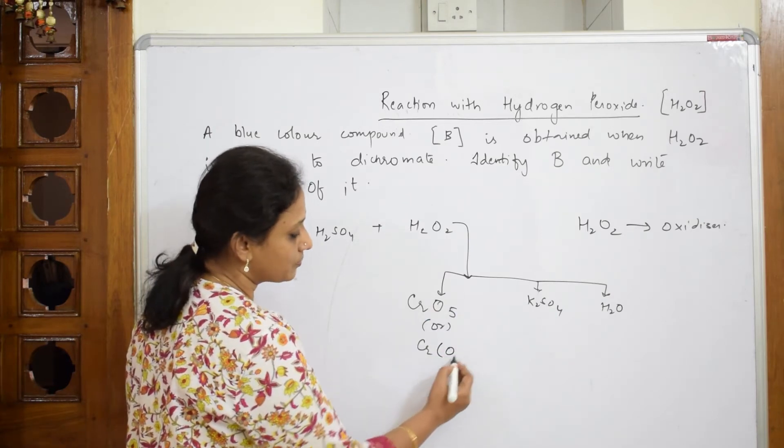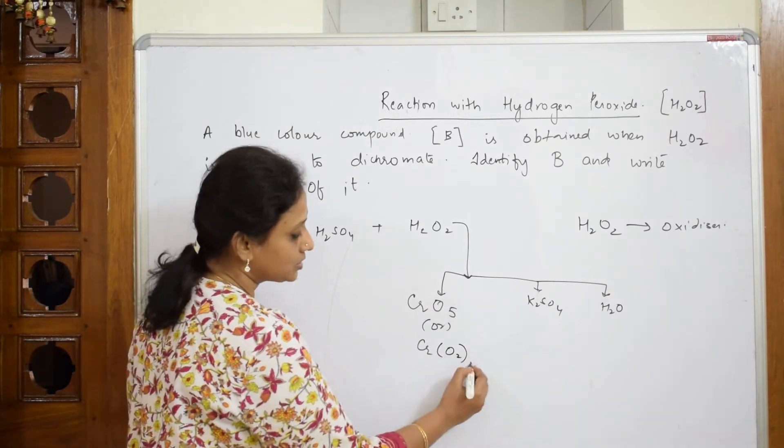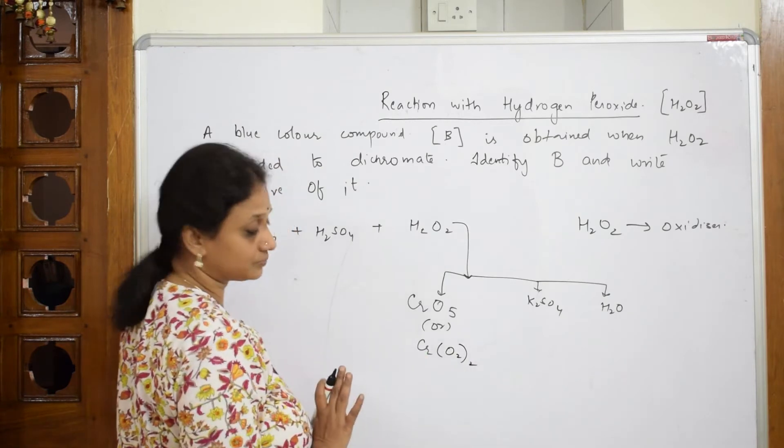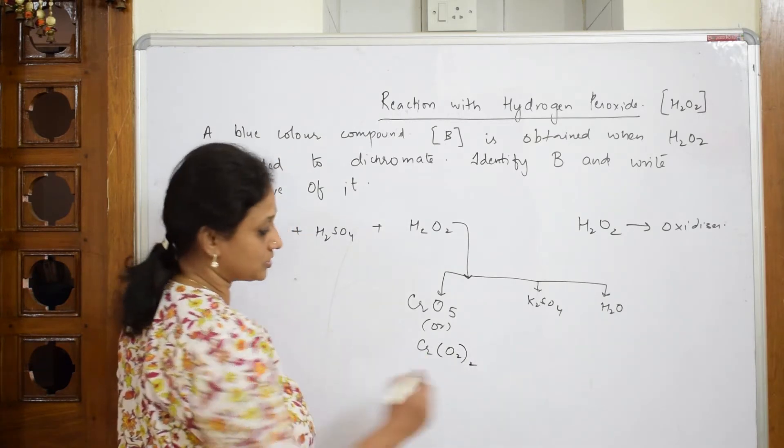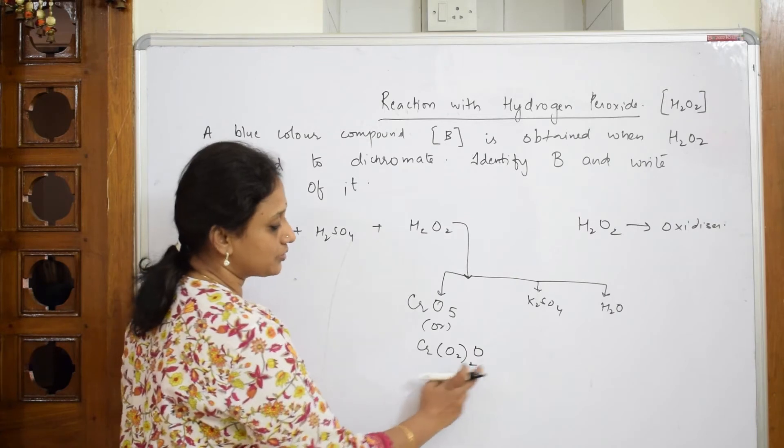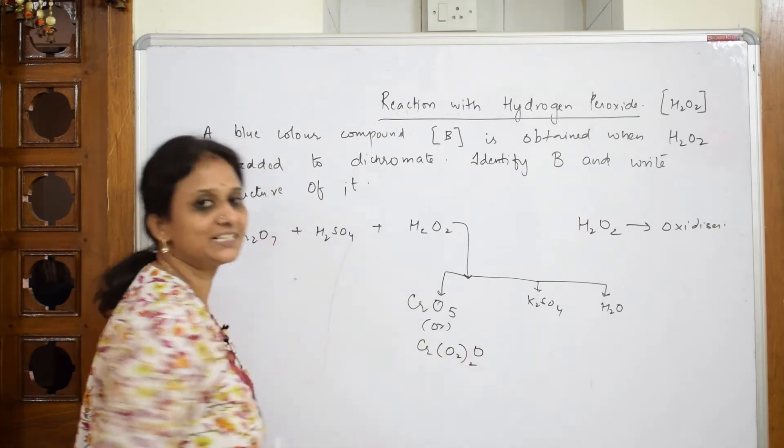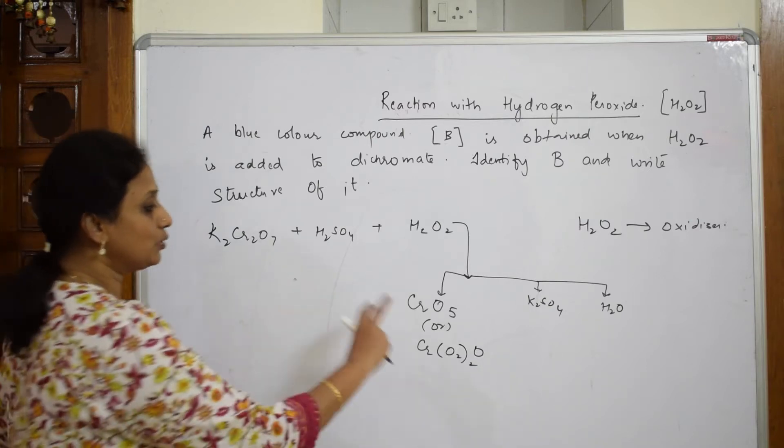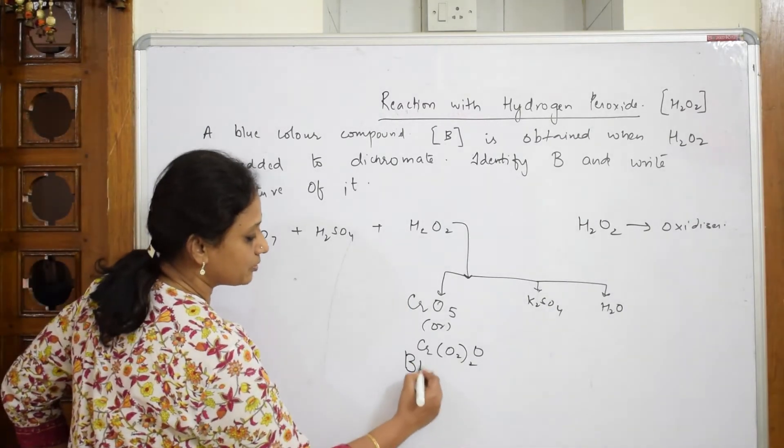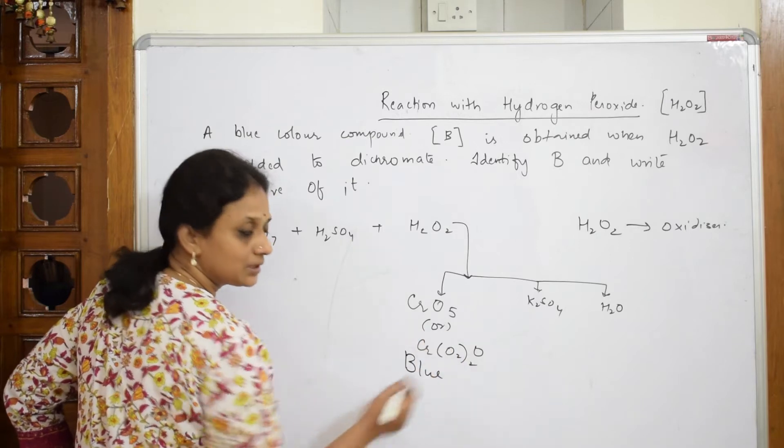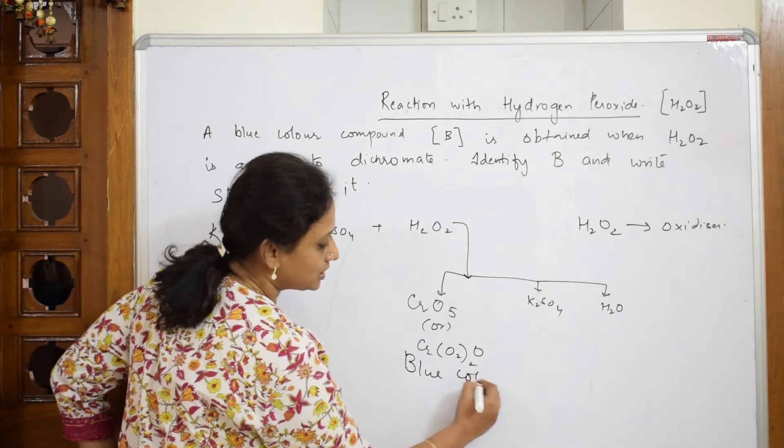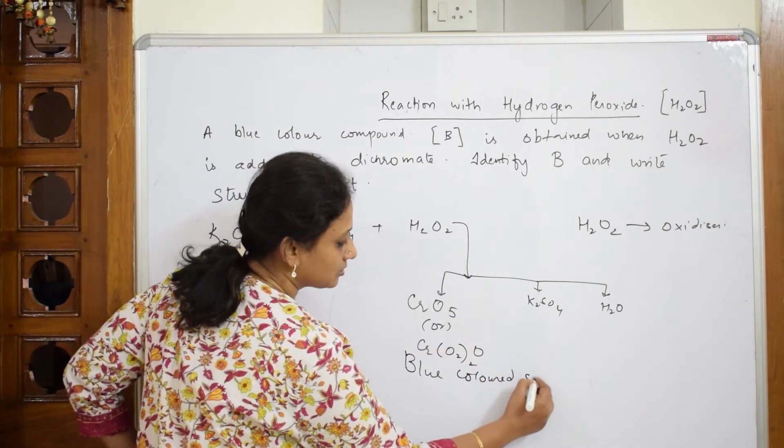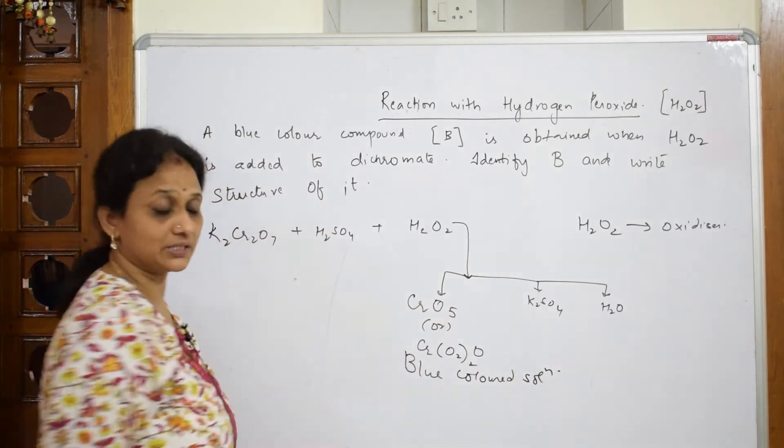How can I write CrO₅? It can be written like this also. See here, Cr with 5 oxygens - I'm distributing it: O₂, O₂, and O. So 2 + 2 are 4, plus 1 oxygen. These two O₂ groups are peroxide linkages. So this peroxide linkage with chromium - the blue colored solution is because of the formation of chromium peroxide.